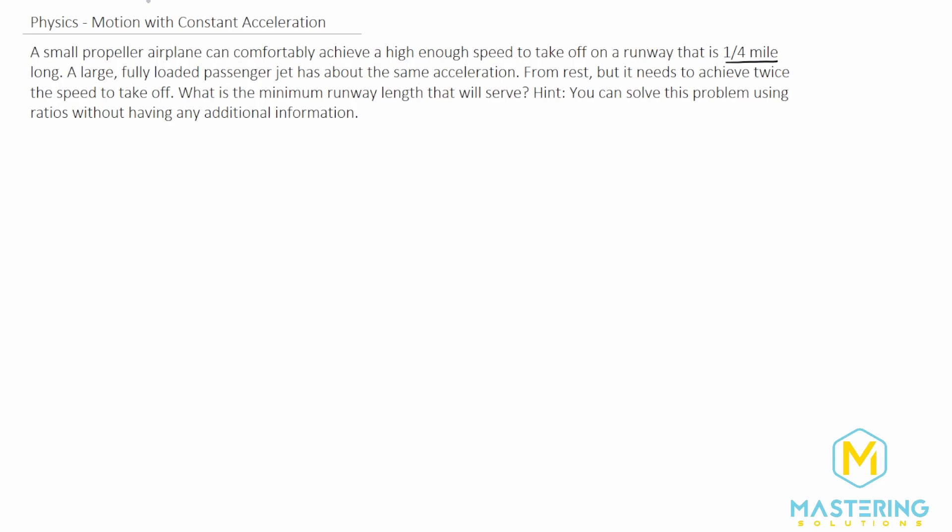So they tell us that we know what the initial velocity is. We know there's some sort of a final velocity, acceleration, and the runway length, which we'll say is the delta x.